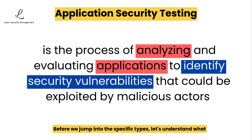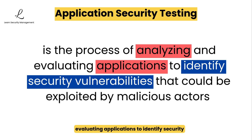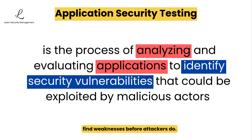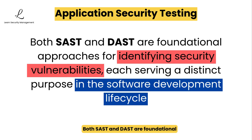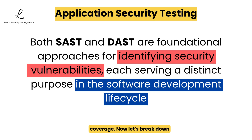Before we jump into the specific types, let's understand what application security testing actually is. It is the process of analyzing and evaluating applications to identify security vulnerabilities that could be exploited by malicious actors. The goal is simple: find weaknesses before attackers do. Both SAST and DAST are foundational approaches for identifying security vulnerabilities, each serving a distinct purpose in the software development lifecycle. When used together, they provide comprehensive security coverage.